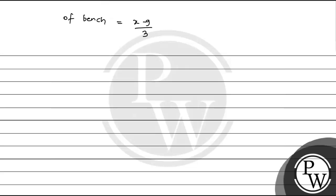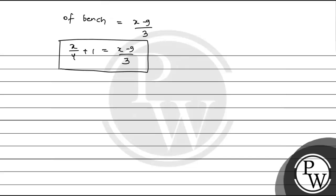According to the question, x/4 + 1 equals (x minus 9) divided by 3. This is the equation representation of the given linear equation in one variable. I hope you understand, thank you so much.